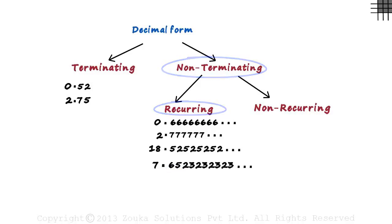The non-terminating recurring category forms a very important category in decimal representation. We will look at just this category in one of our videos.